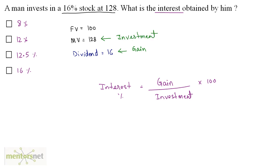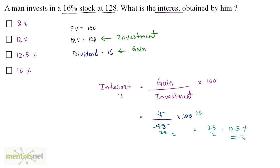Putting the values into the formula: interest percentage = (gain / investment) × 100 = (16 / 128) × 100. Simplifying: 16 × 2 = 32, and 25/2 gives us 12.5%. So option D is the correct answer. One important thing: don't confuse the interest obtained with the dividend — both terms are quite different.